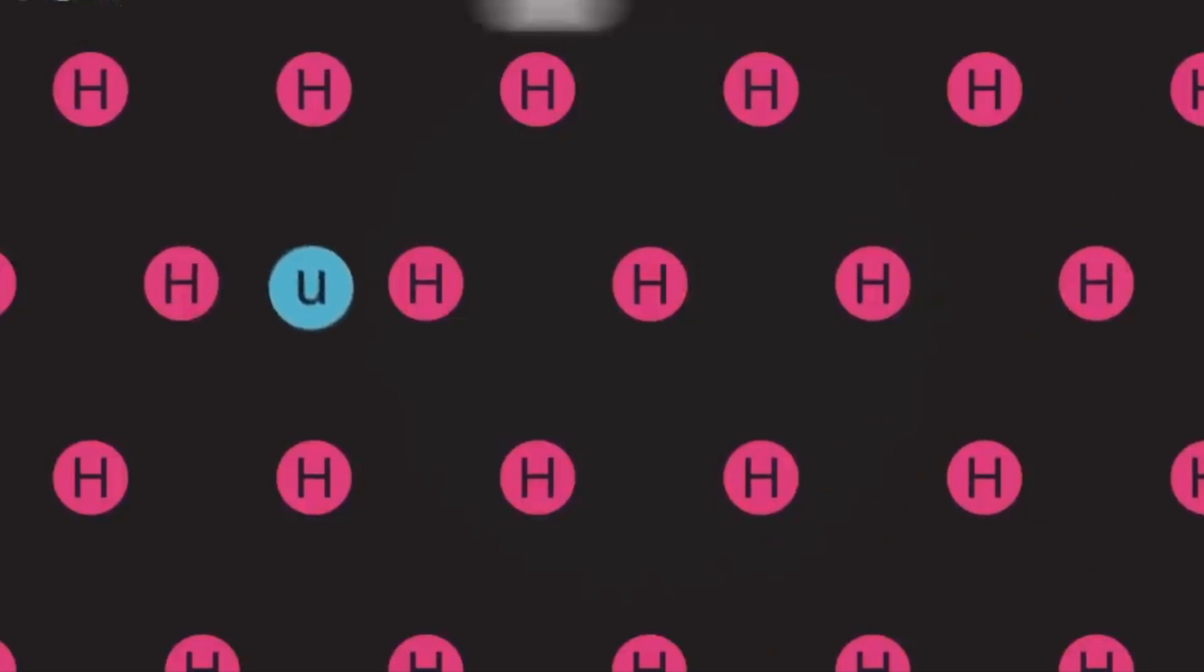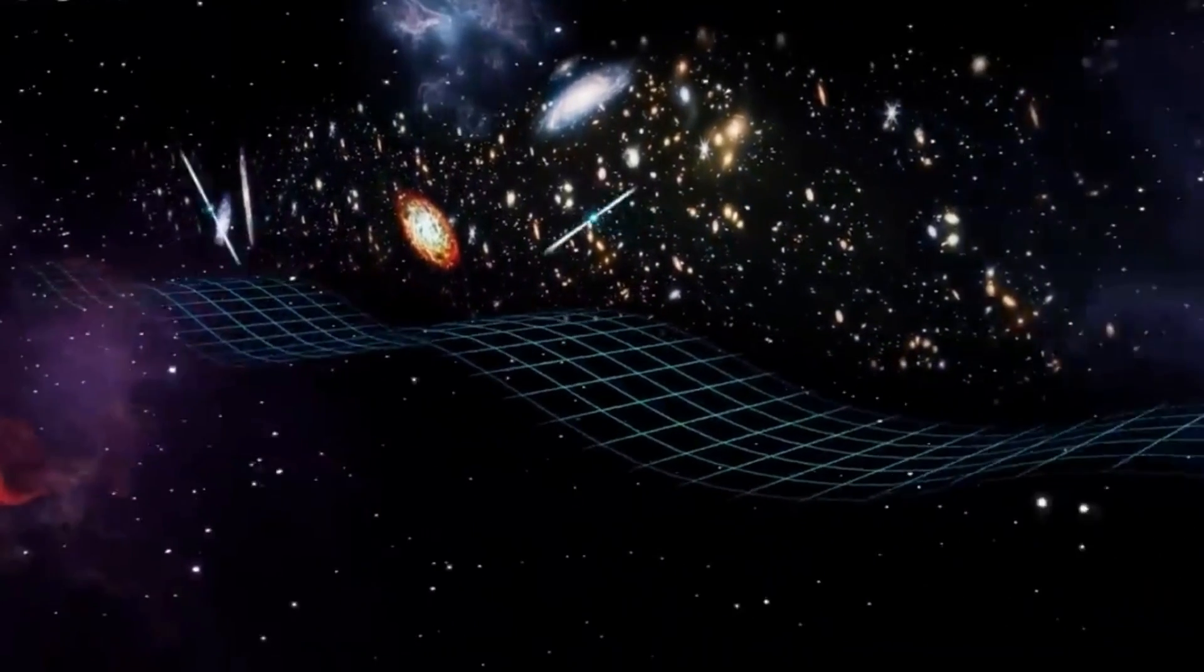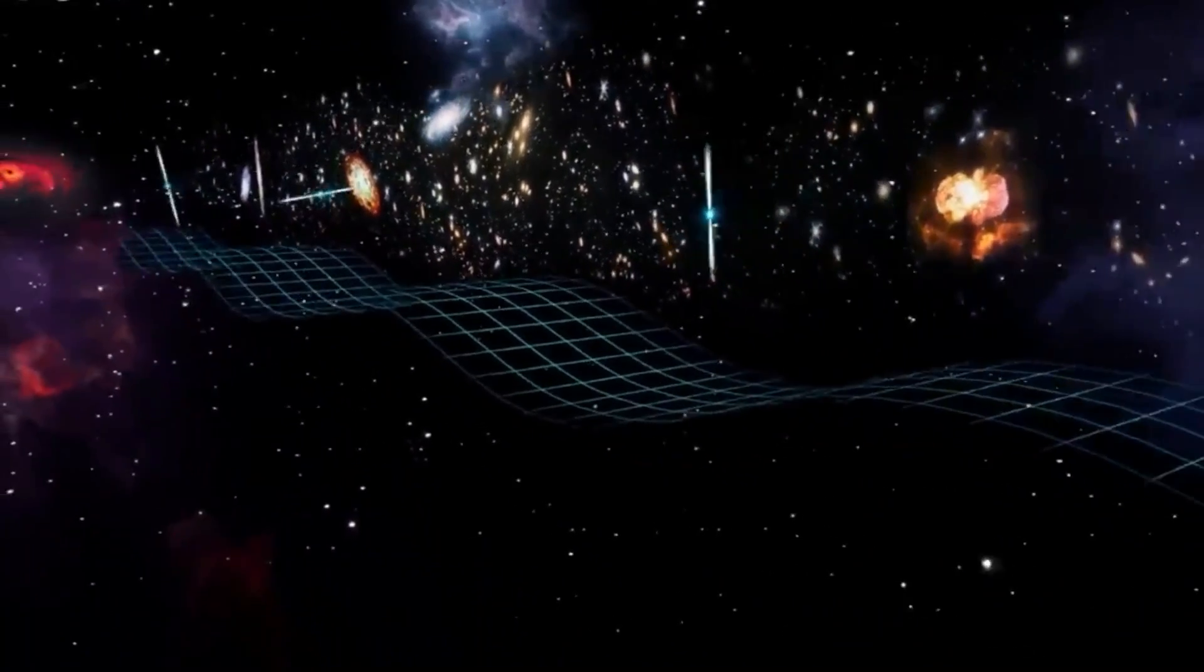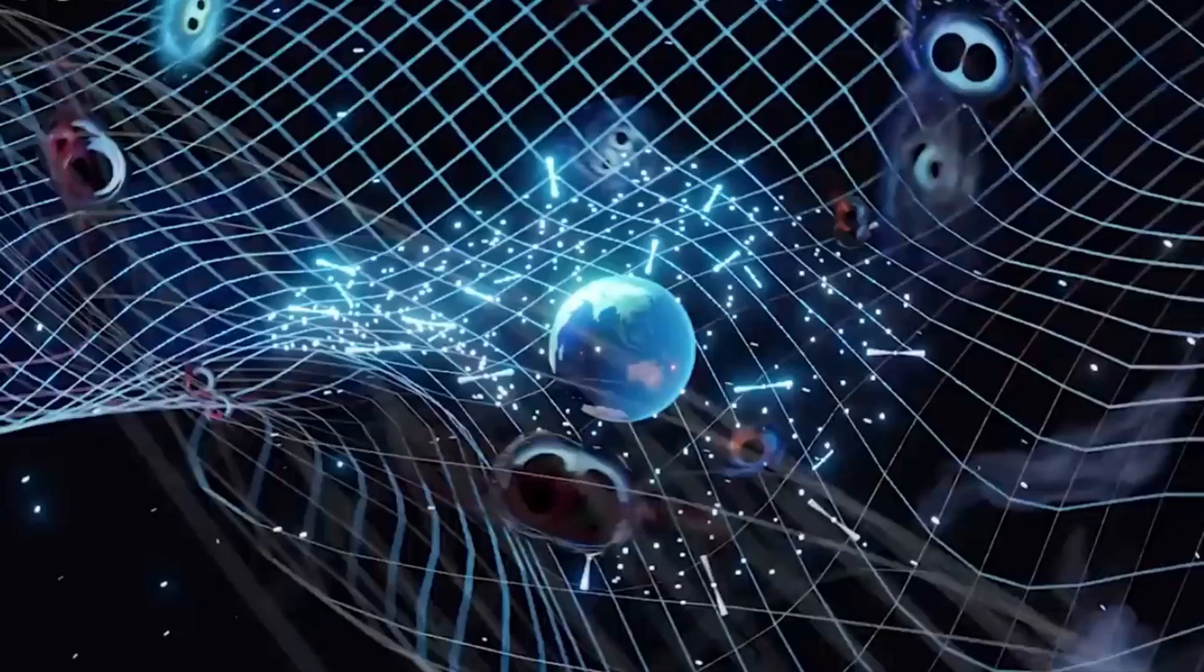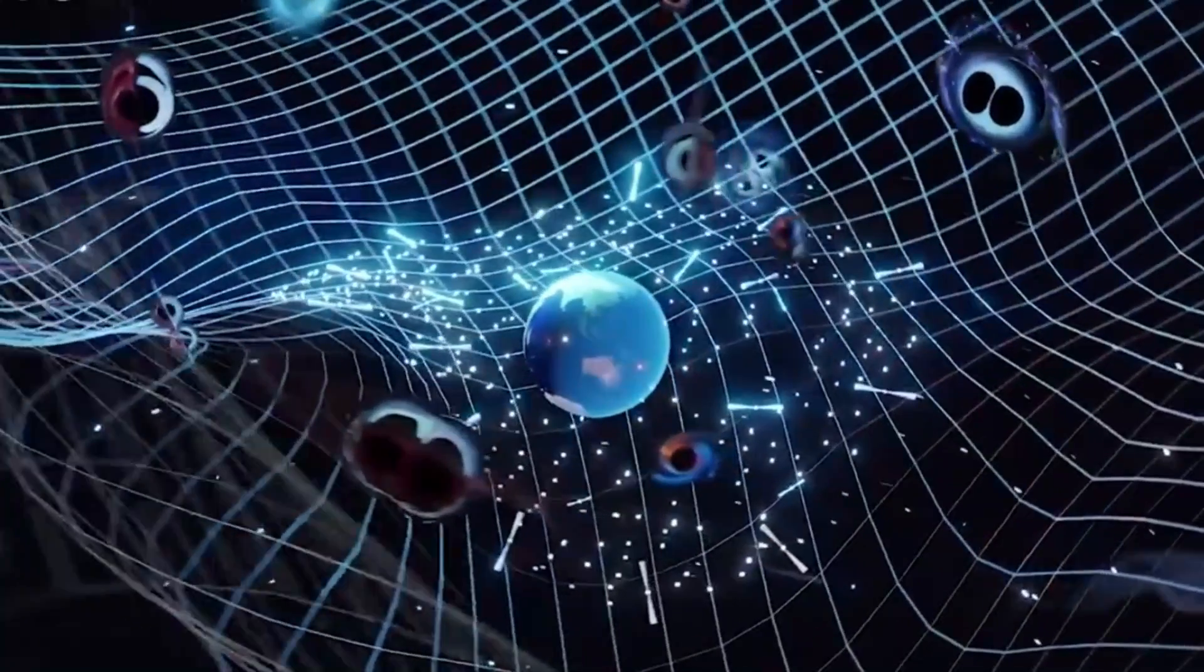On the other side of the pool, we have our casual swimmers, electrons, and quarks. They love to have fun and create a bit of a splash, playfully interacting with the Higgs field, which gives them their mass. It's like they've got their own cosmic water wings.